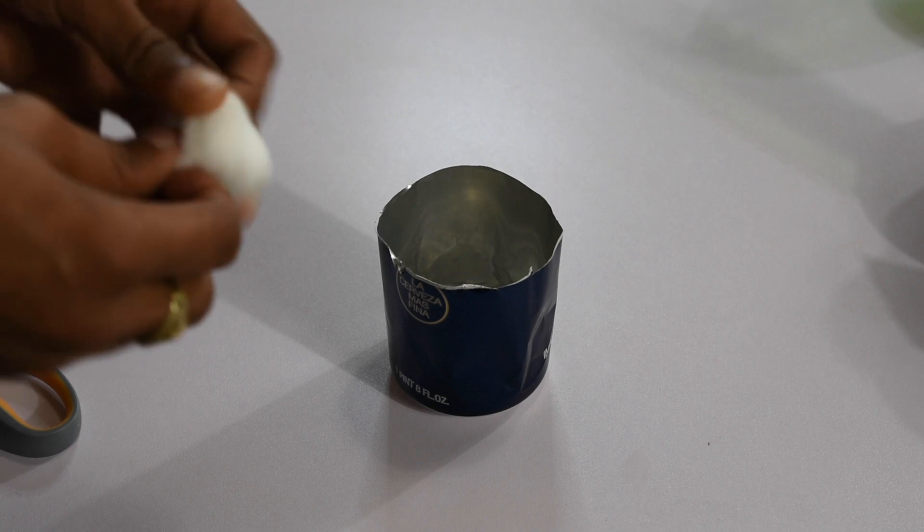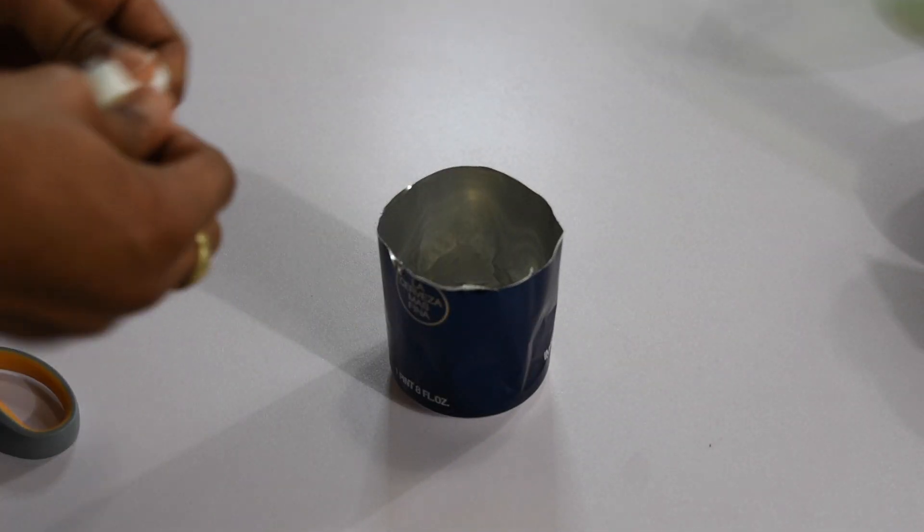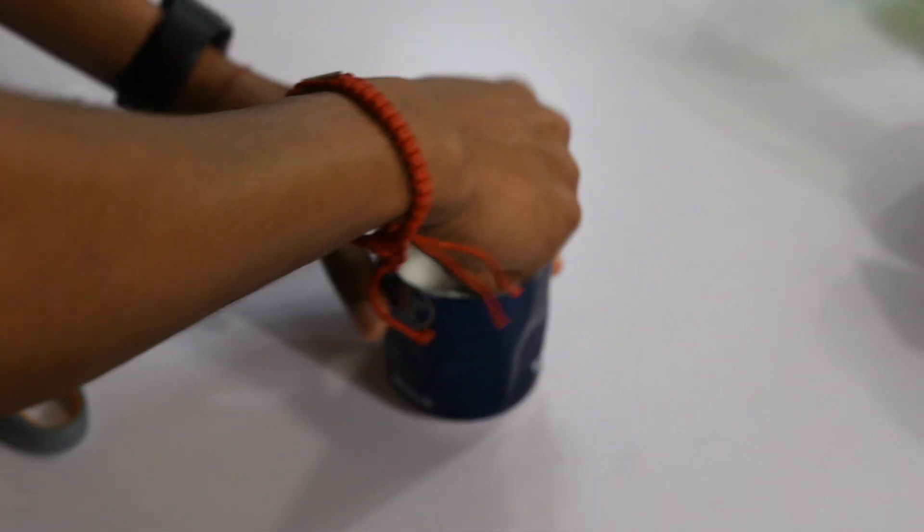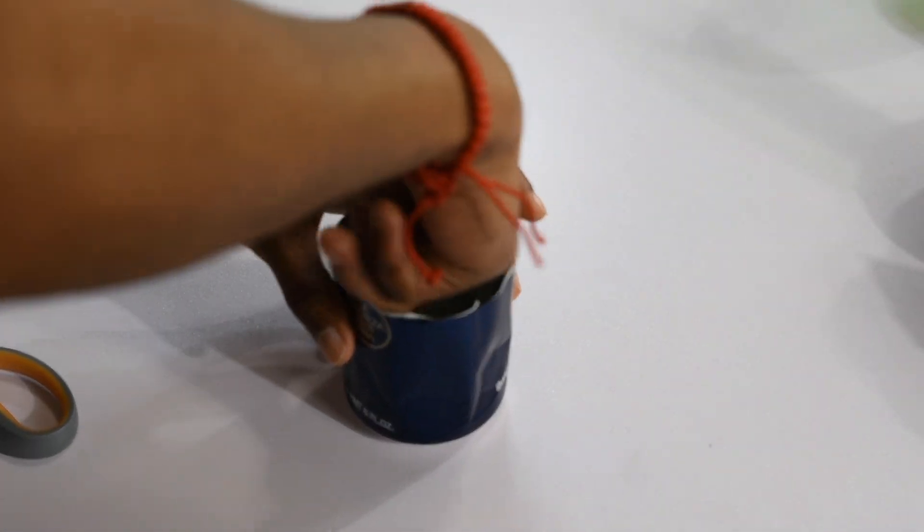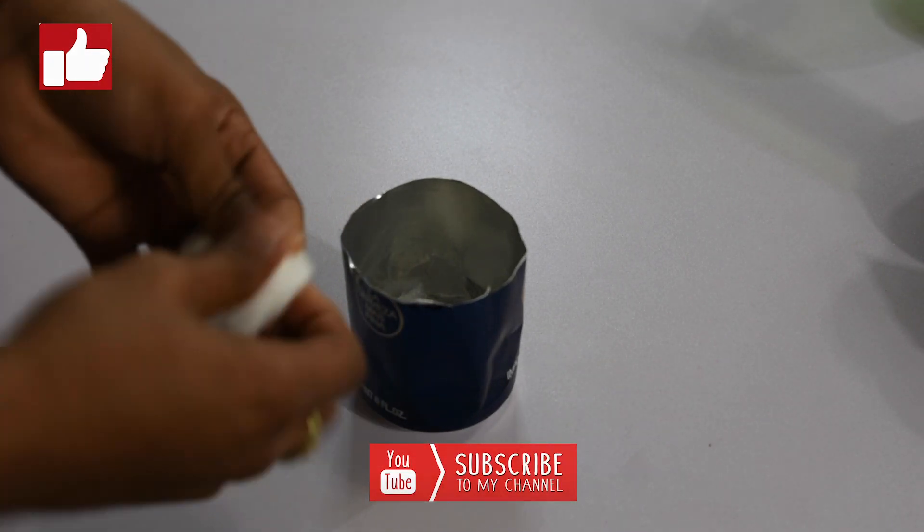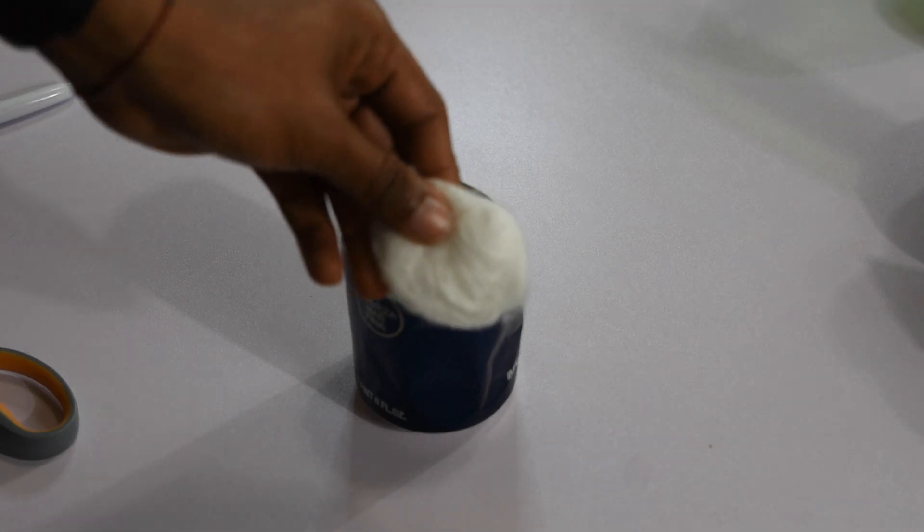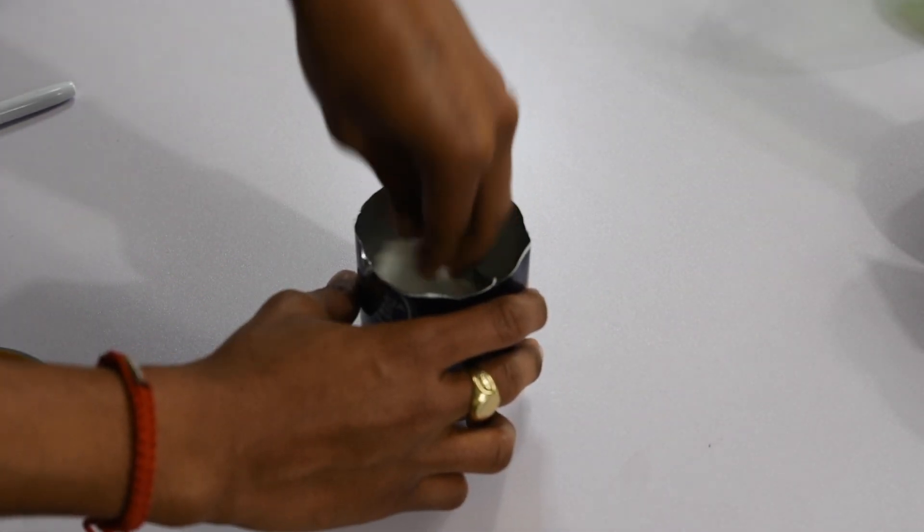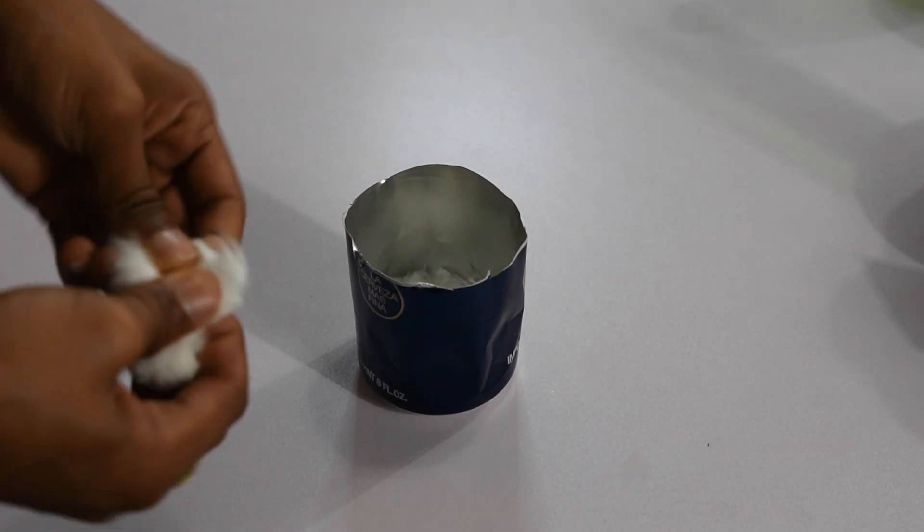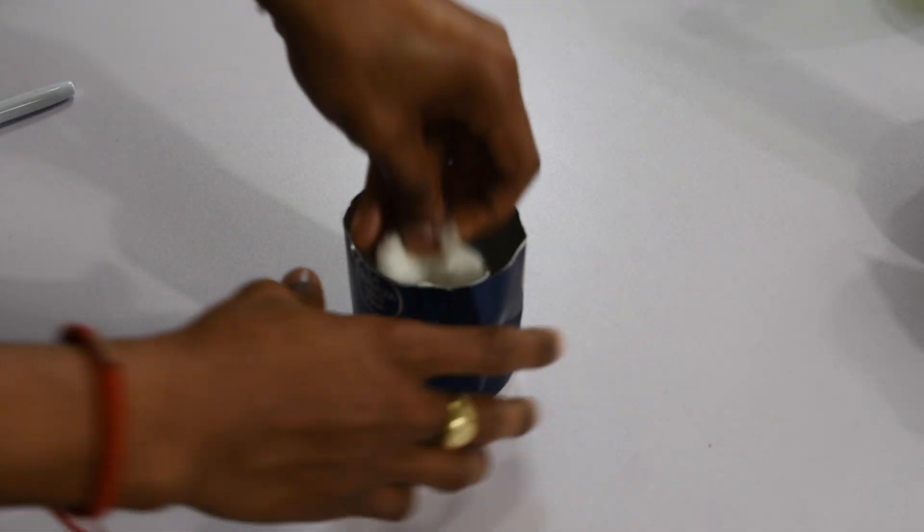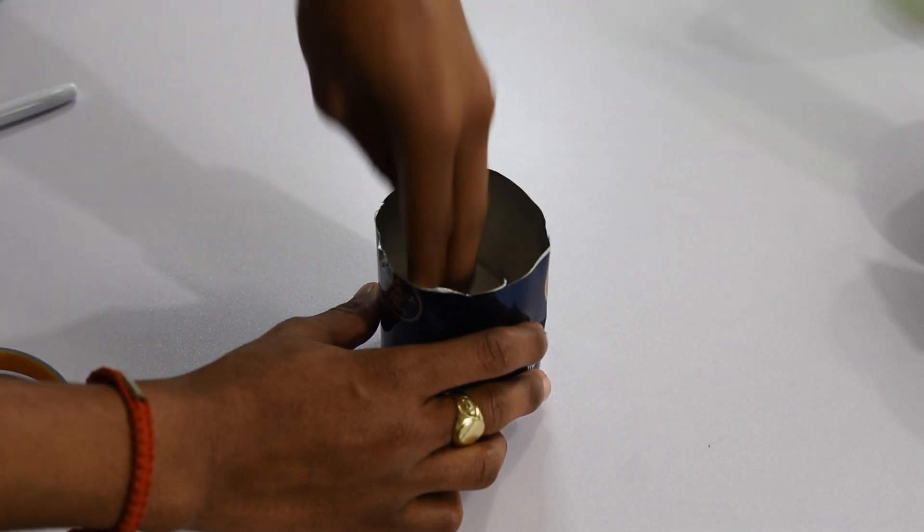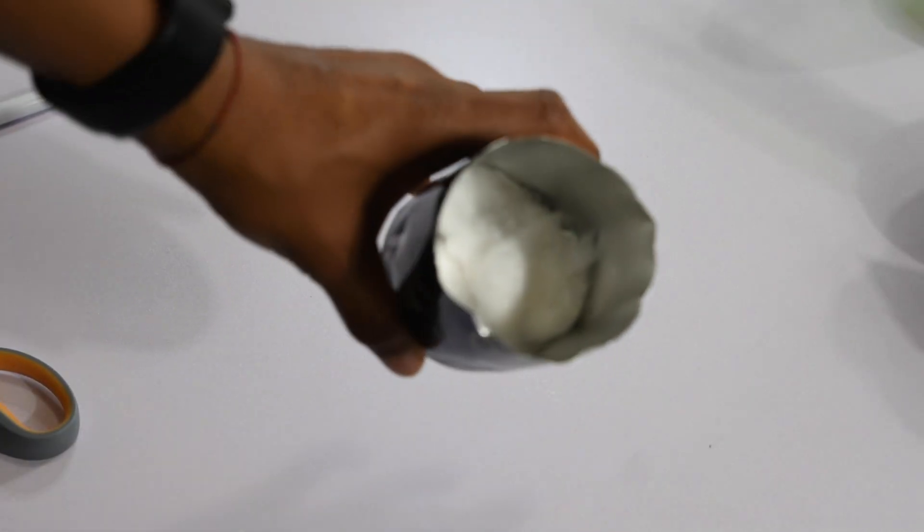Alright, the next step we're going to take out a cotton ball like this and then we're going to just spread them out like this and then put it at the bottom. Take another cotton ball, put it at the bottom, spread out something like this, put it at the bottom. Make sure it's all surfaced.